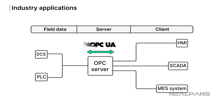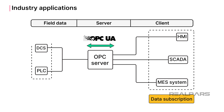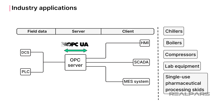A major application for OPC UA will remain the subscription of data by HMI and Data Historian applications from PLC, DCS, and Building Automation Controllers. OPC UA is often the only mechanism that HMI systems can access data from vendor-supplied equipment, like chillers, boilers, compressors, lab equipment, and single-use pharmaceutical processing skids.